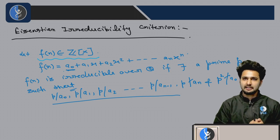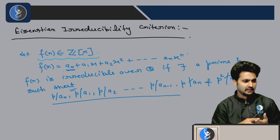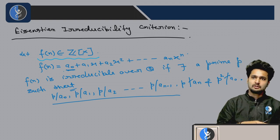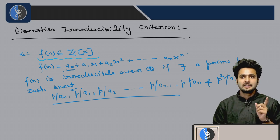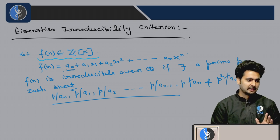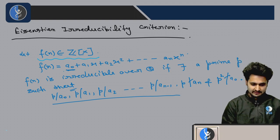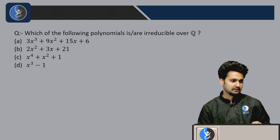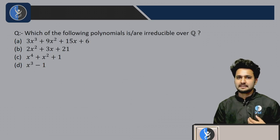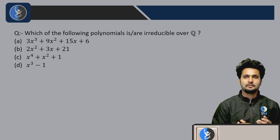The prime p should divide all coefficients except the highest degree coefficient. p should not divide the highest degree coefficient. And if I square the prime, p squared should not divide the constant coefficient. If such a prime exists, then the polynomial in Z[x] is irreducible over Q. This is Eisenstein's criterion.